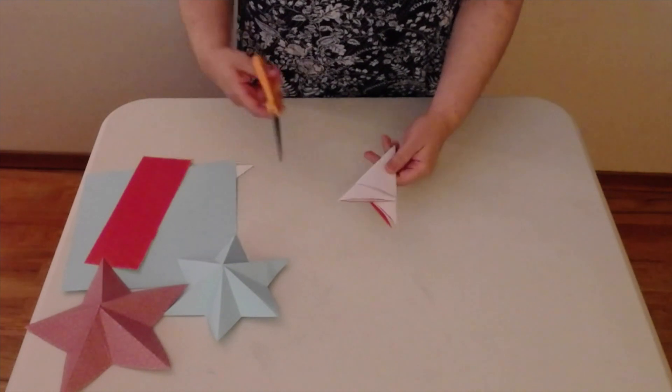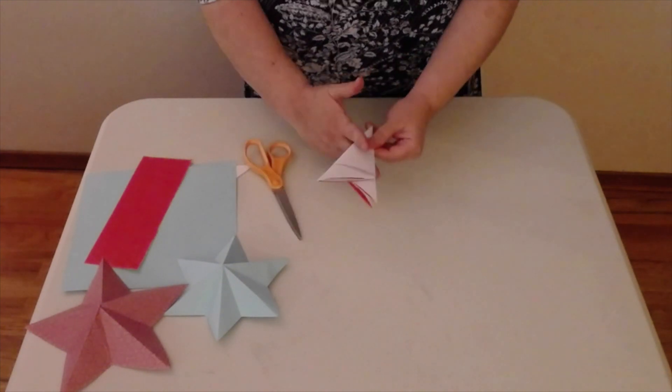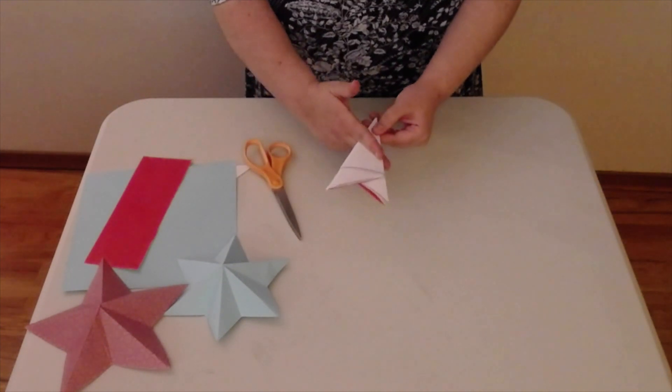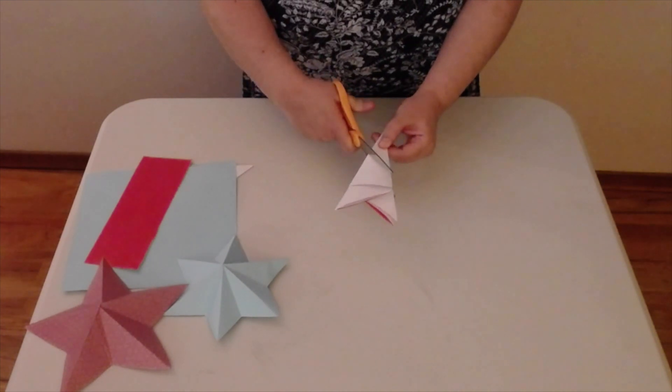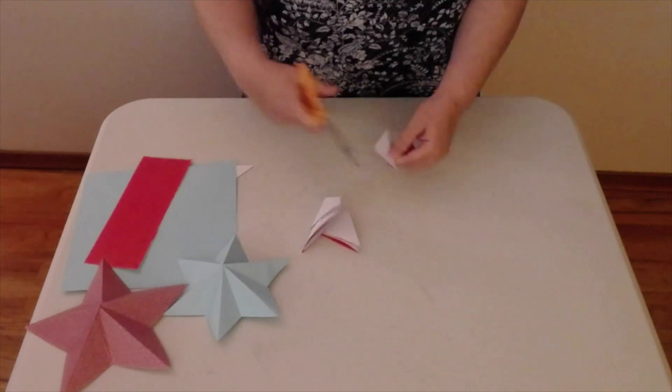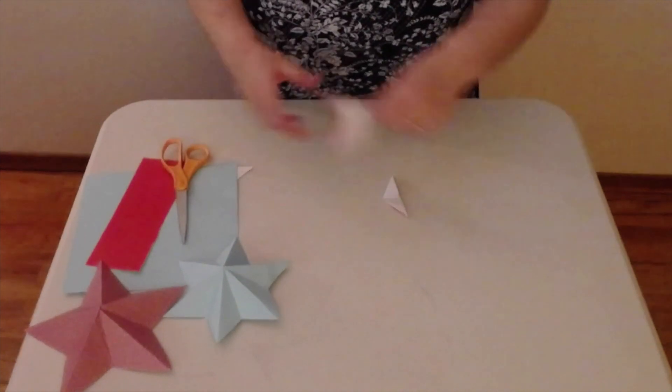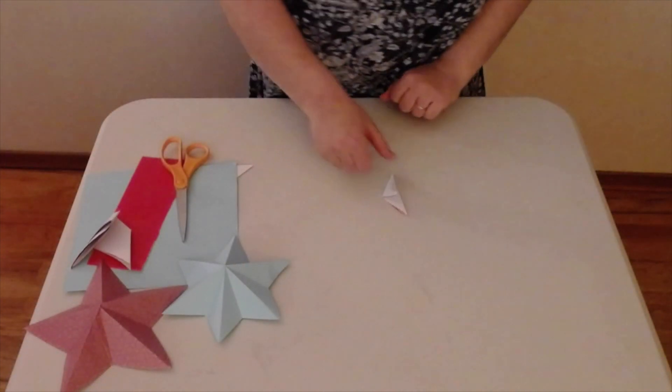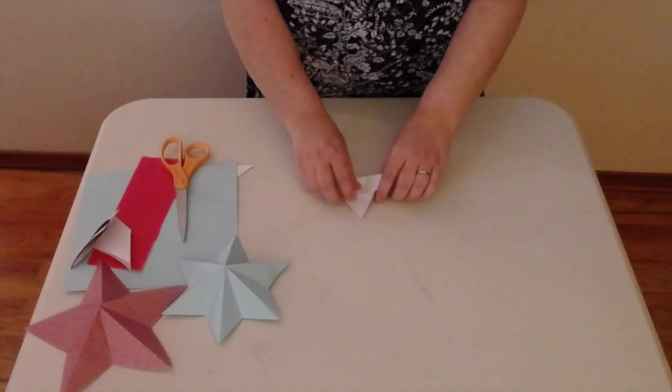So what you want to do is take your scissors at this point and you're going to cut it at a pretty drastic angle. I'm just going to take them and cut it just like this straight across. You don't need this part anymore. That can just be thrown away and then you can open this.